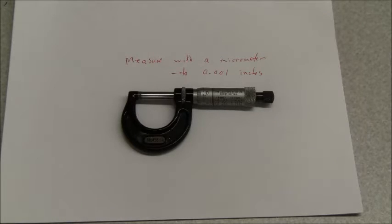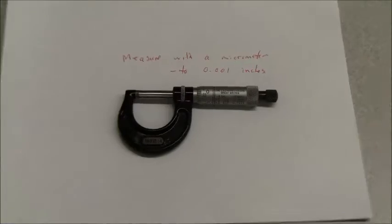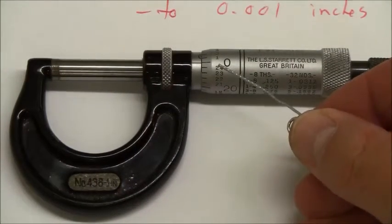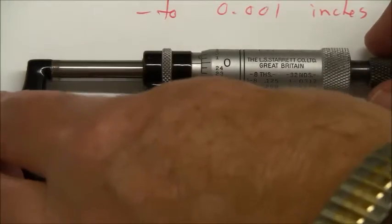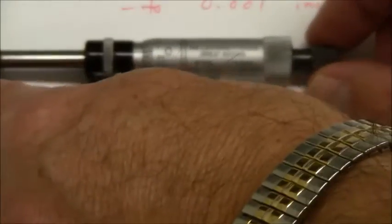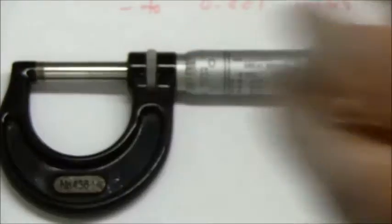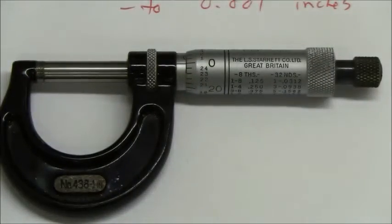You can see here the micrometer we used in class. Before I begin to measure anything, I'll make sure it's set to zero. You can see it shows zero here, but to make sure, I'll turn that. You hear that ratchet? That indicates it is in fact set properly to zero.